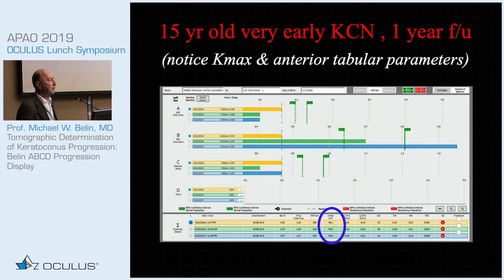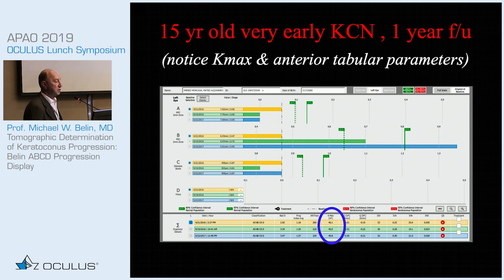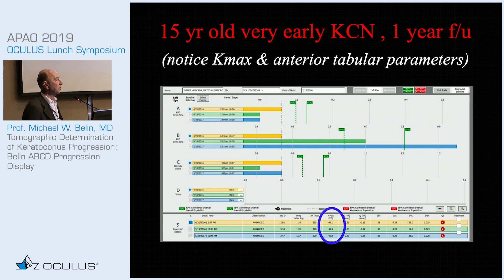Here is a 15-year-old with very early keratoconus shown against a normal population over a one-year follow-up. Critically, using Kmax there was absolutely no change — a young patient with stable Kmax and no change on the anterior surface, appearing to have a stable exam. But notice the back surface: there is marked change in posterior ectasia. This is progressive, subclinical disease — the patient retains good vision and remains asymptomatic, but has progressive deterioration of ectatic disease. This is when you should be intervening, not waiting for anterior surface changes and vision loss.